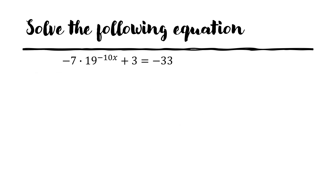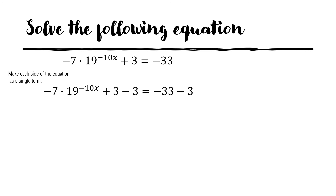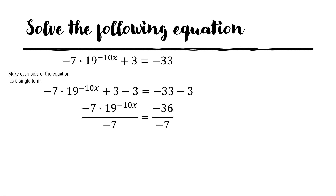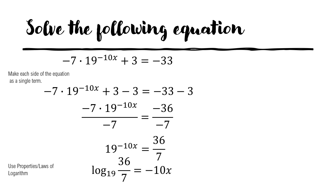Let's proceed to the last example: negative 7 times 19 raised to negative 10x plus 3 equals negative 33. First step: make each side of the equation a single term. We subtract both sides by 3. Since this equals 0 and this equals negative 36, we divide both sides by negative 7. So we have 19 raised to negative 10x equals 36 over 7. We can now use the properties or laws of logarithm: logarithm of 36 over 7 with base 19 equals negative 10x.